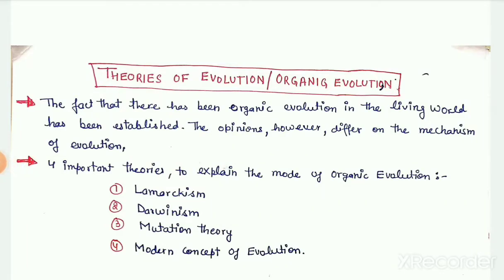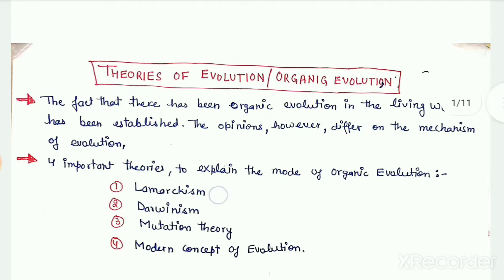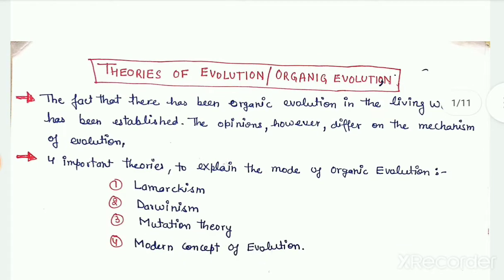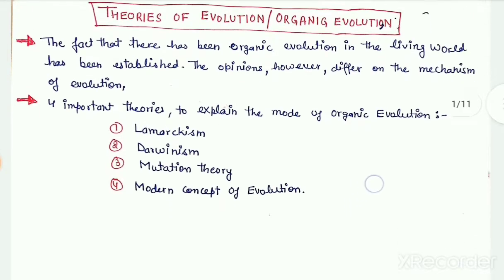Hello dear students, our today's topic is Lamarckism, which is one of the theories to explain organic evolution. Organic evolution is defined as the process of evolution of primitive, simpler forms of life into present-day complex life forms by gradual changes. There are four important theories to explain the mechanism of organic evolution: Lamarckism, Darwinism, the mutation theory, and the modern concept of evolution. Today in this lecture we will take up the first theory, which is Lamarckism.